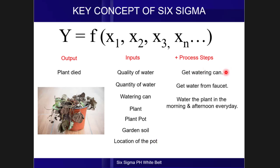The process steps are the following: get watering can, get water from faucet, water the plant in the morning and afternoon every day.